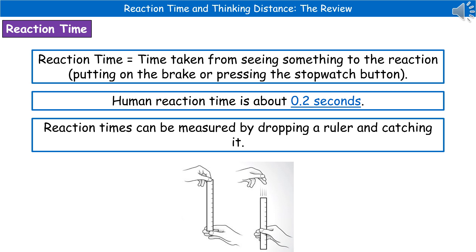If we wanted to measure reaction time, we can do the ruler drop test. You have your hand just resting off the edge of a desk with a ruler just above it, and then you drop it. When you catch it, the distance it travels — you can then look up on a chart to see what the reaction time actually is.